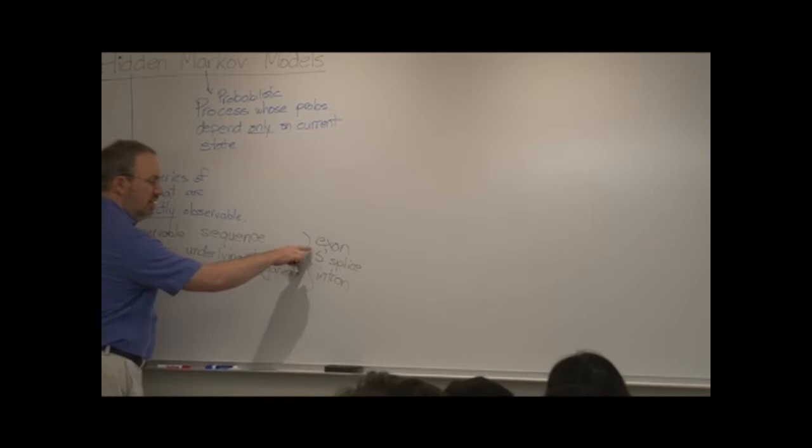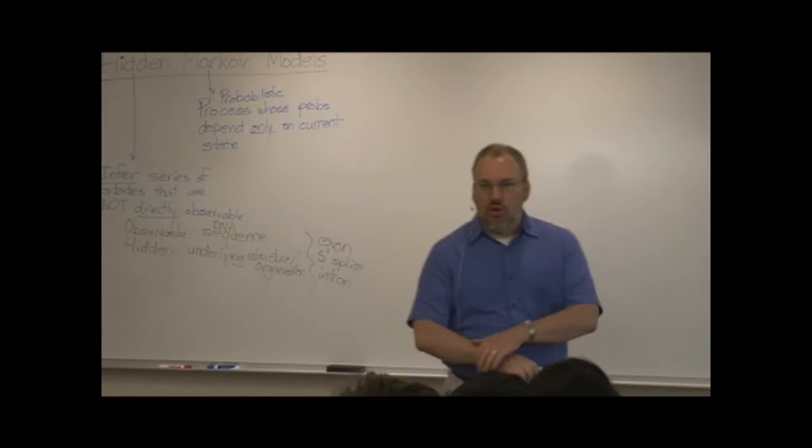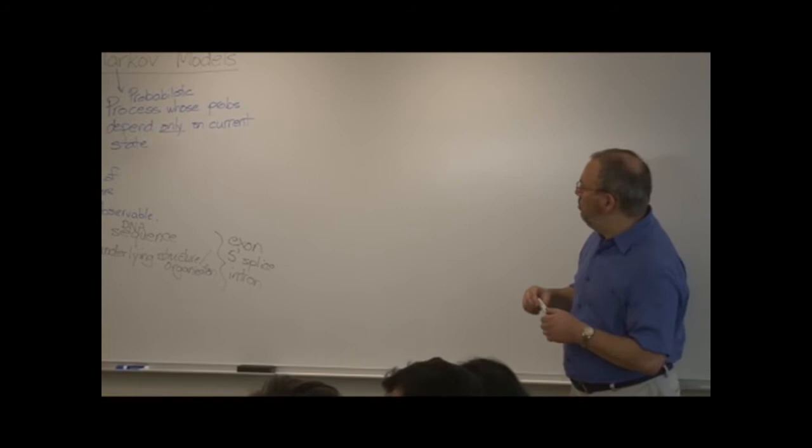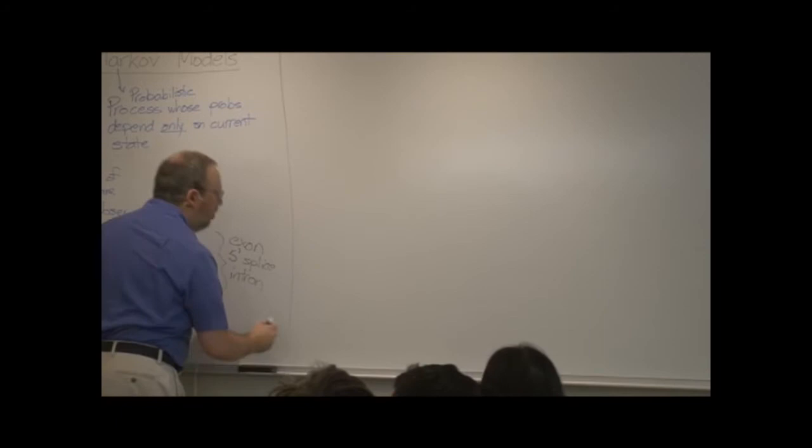So this is going to be the hidden part. The observed part will be the DNA sequence itself. Any questions so far? People are reasonably okay with this? Okay. So let us start this off. I'm going to be drawing up a series of vectors and matrices that describe the system, and it's been pointed out that it's helpful to understand where these things come from.